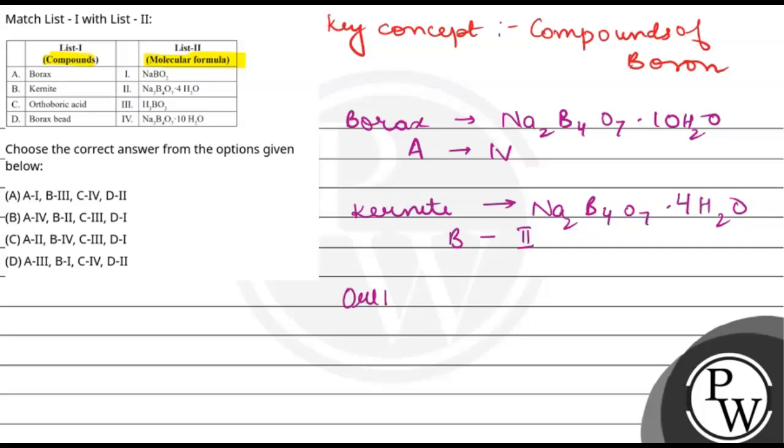Next is orthoboric acid. So orthoboric acid, this is H3BO3. So that means C is 3.